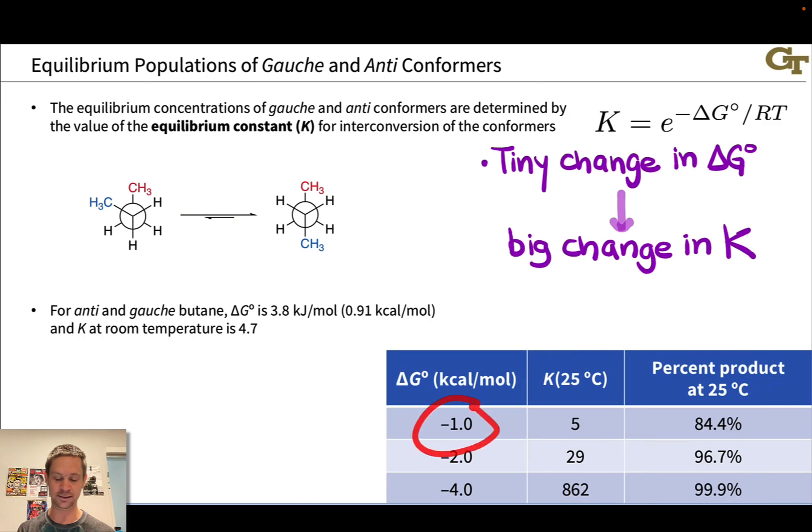So say the delta G is negative 1 kilocalorie per mole. The value of K at 25 degrees C is then about 5. And if we translate that into a percent product in the reaction mixture, or in the mixture of the compound, in the case of different conformers,